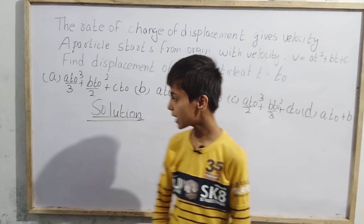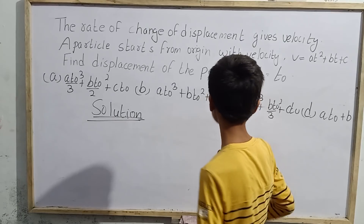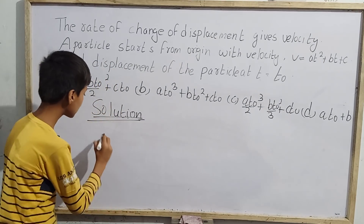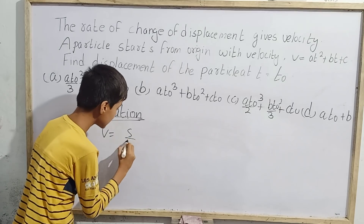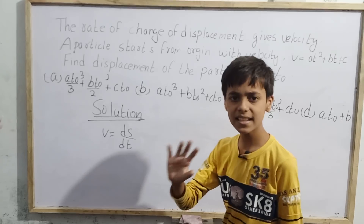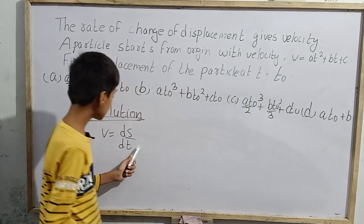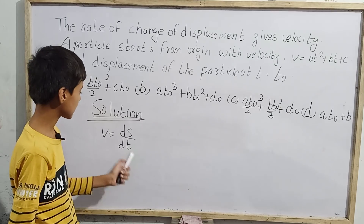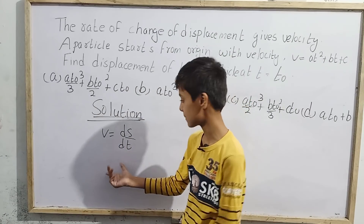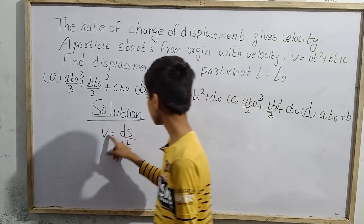In the solution, first, the rate of change of displacement gives velocity. We can write velocity equals ds/dt. Why ds/dt? Because the rate of change of any quantity — just like rate of change of y with respect to x is dy/dx — the rate of change of displacement s with respect to t is ds/dt.